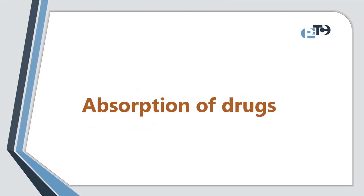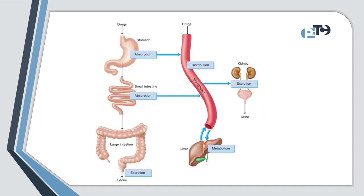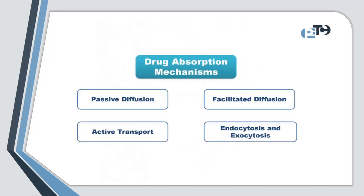Drug absorption is a fundamental pharmacokinetic process that determines how a drug moves from its site of administration into the bloodstream. It is a critical step that influences the drug's bioavailability, efficacy, and safety profile.